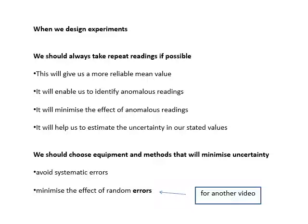When you work out the average, they will have an effect, but the more readings that you have, the less effect they will have. So you are minimizing the effect of anomalous readings. It'll help you to estimate the uncertainty if you have multiple measurements. You should choose equipment and methods that will minimize uncertainty - avoid systematic errors and minimize the effect of random errors. I'm going to talk about systematic and random errors in another video.